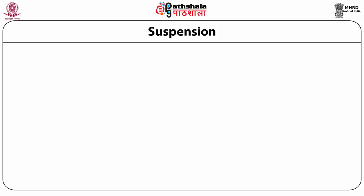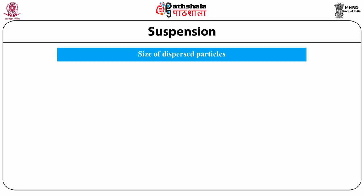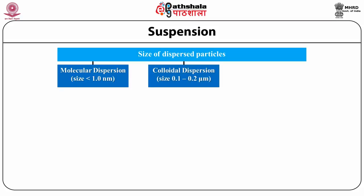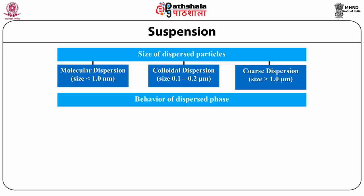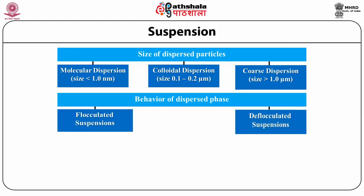Suspensions can be classified on the basis of size of dispersed particles as: molecular dispersion with a size less than 1 nanometer; colloidal dispersion in a size range of 0.1 to 0.2 micrometer; and coarse dispersion with a size greater than 1 micrometer. They can also be classified on the basis of behavior of the dispersed phase as flocculated suspensions and deflocculated suspensions.